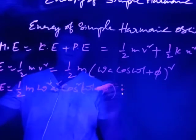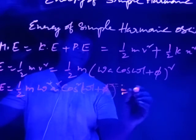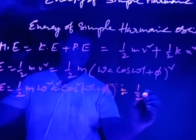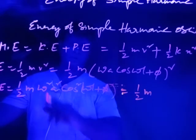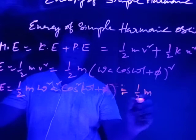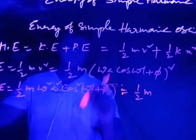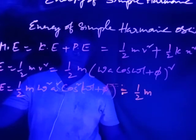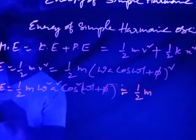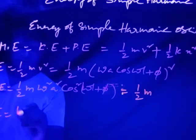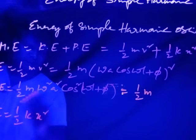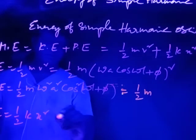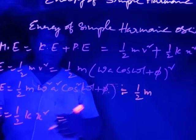We can also write this using cos(ωt), giving ½m·ω²A²cos²(ωt + π). For potential energy, PE = ½kx², and we need to express x².